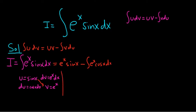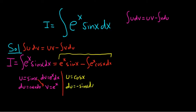Now we'll do parts again. Many people use different variables, but I'll reuse the same ones — u is a dummy variable. So u equals cosine x, du equals negative sine x dx, and dv is e to the x dx, so v equals e to the x. A word of warning: once you let u be the trig function, make sure you continue doing that throughout the problem — stick with trig or stick with the exponential.